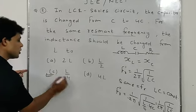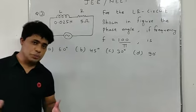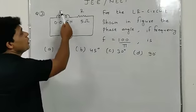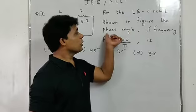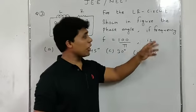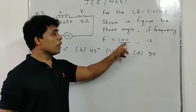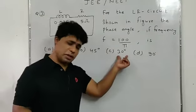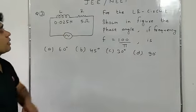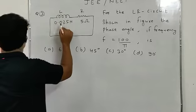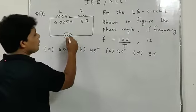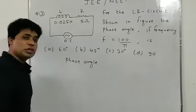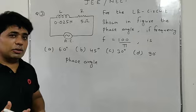Question number three: For an LR circuit with inductor L and resistance R shown in the figure, the phase angle is to be found when frequency f = 100/π hertz. Four options are given: 60°, 45°, 30°, and 90°. Resistance R = 5 ohm, inductance L = 0.025 henry, both connected with an AC source.